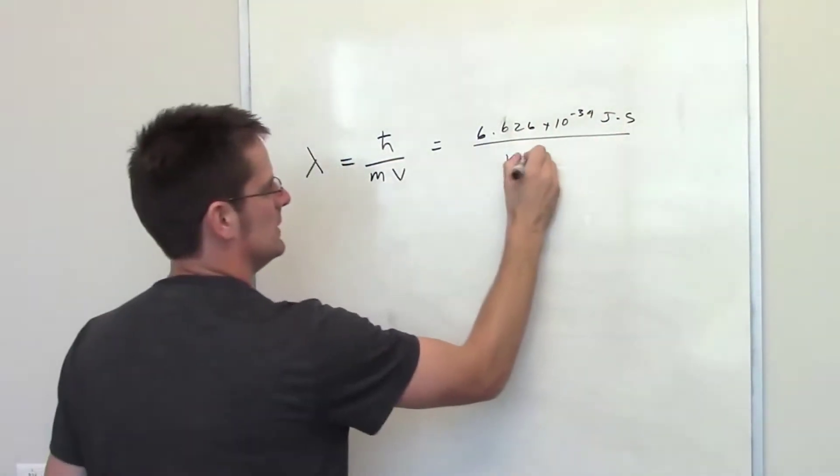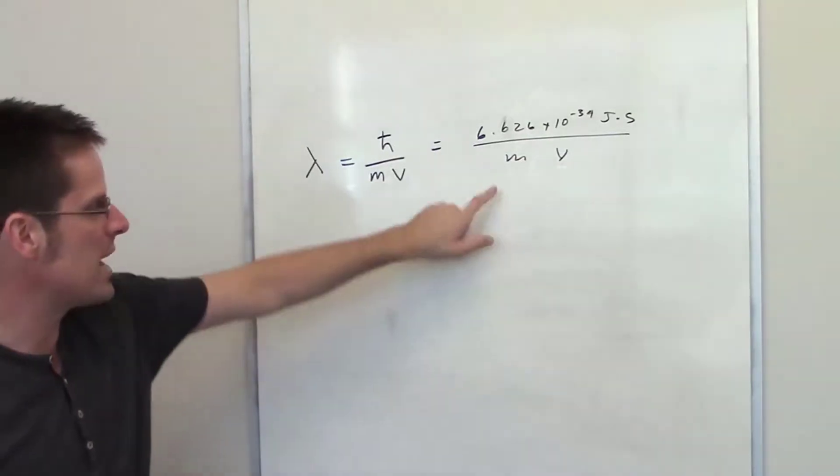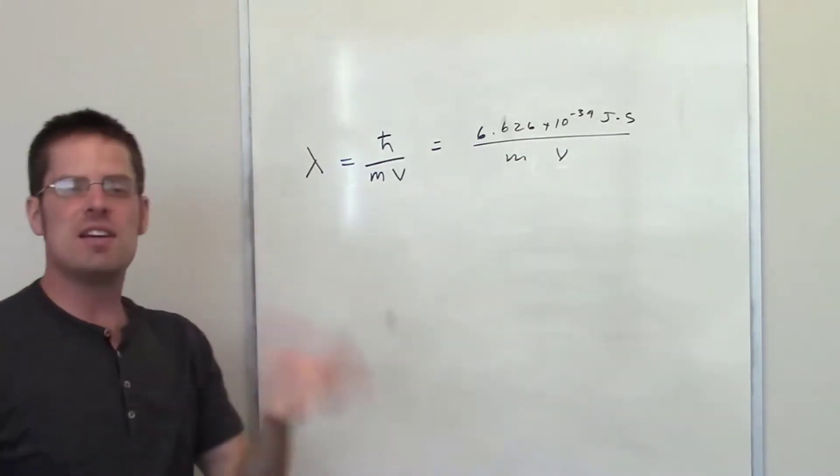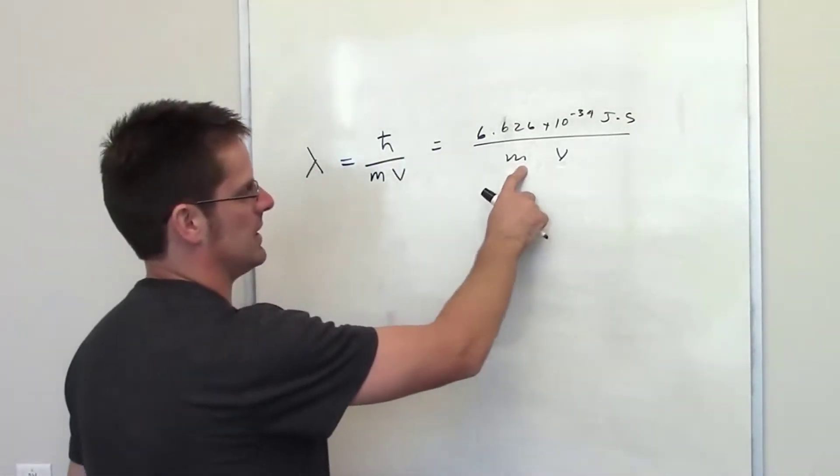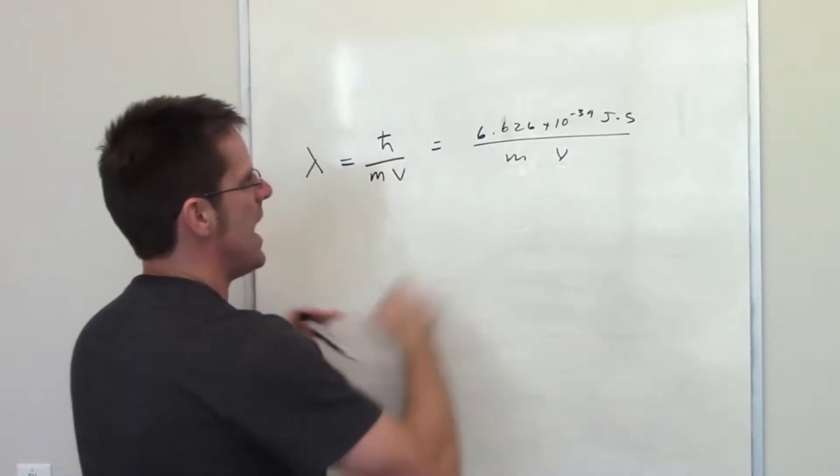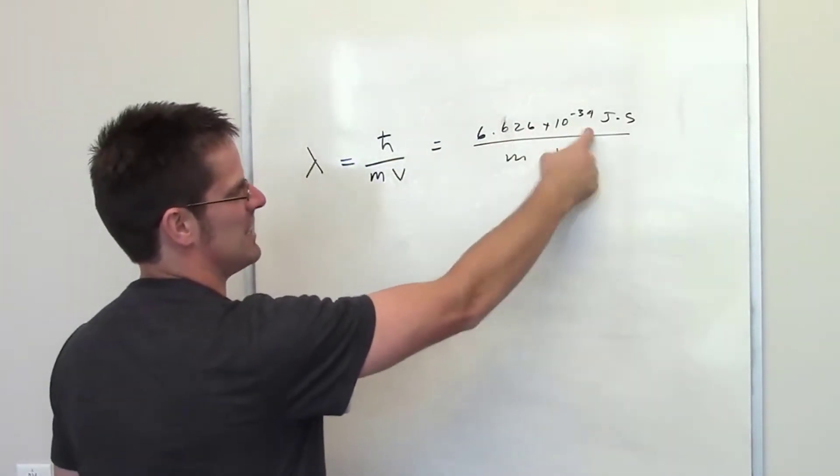If you put in any significant mass, like the mass of something you would interact with such as a golf ball, in kilograms, that number is going to be huge compared to this number, which is tiny, 10 to the negative 34.